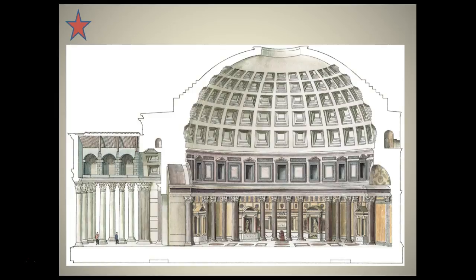The original temple was commissioned by Marcus Agrippa during the reign of Augustus. It was rebuilt by the emperor Hadrian around 126 AD and then dedicated to Agrippa. As with sacred architecture, the site and location carry some sort of sacred meaning, and that does apply here.